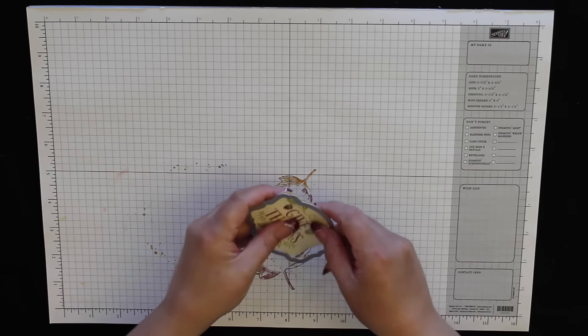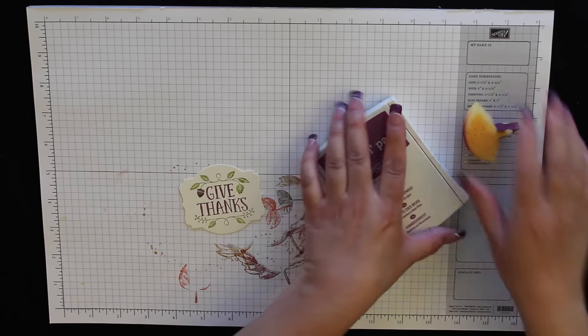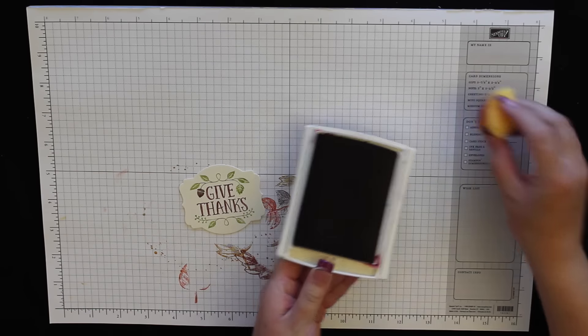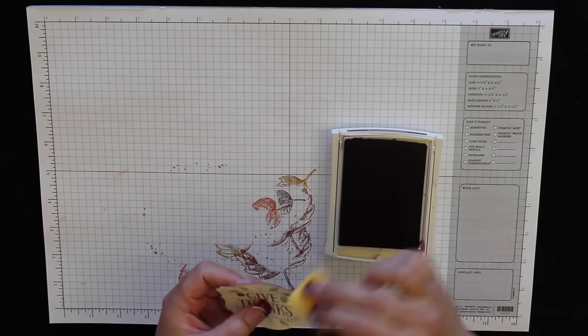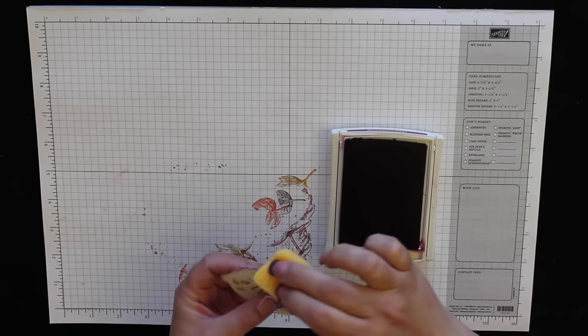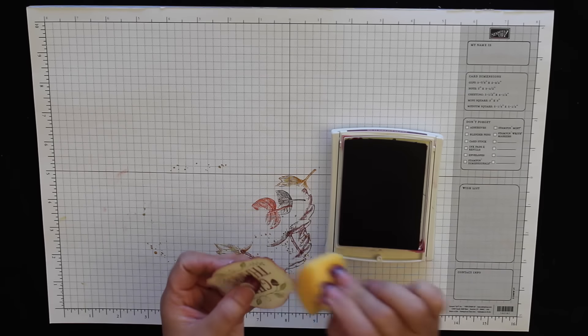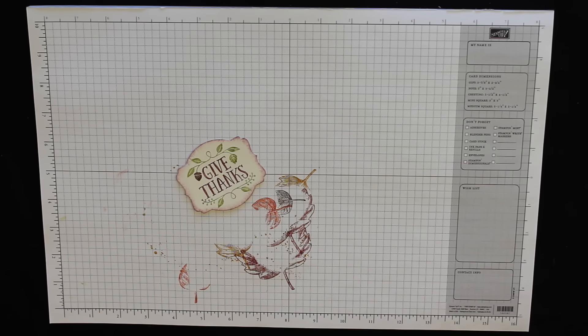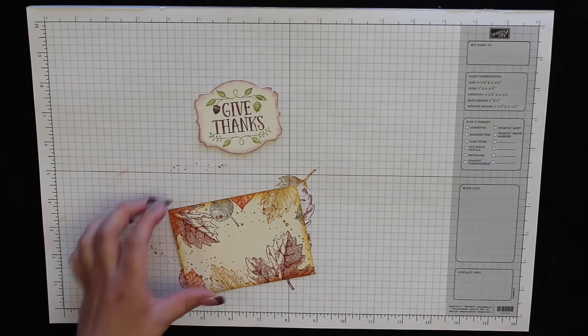Okay, and that's just going to pop right on out. And then last I have my Rich Razzleberry ink and I'm going to sponge around the edges just to give a little color there.